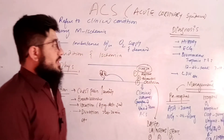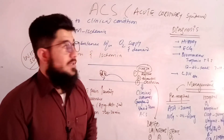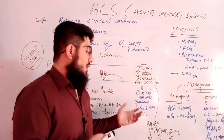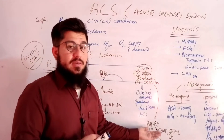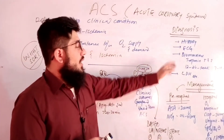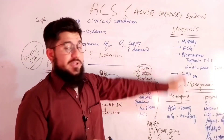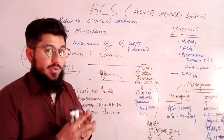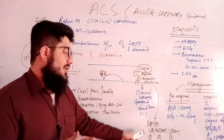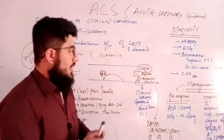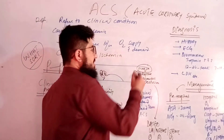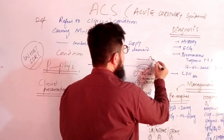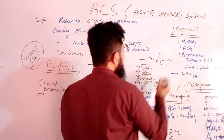Coming towards diagnosis, first we take history, through which we can identify the ACS. Then we go for the ECG — the next step that helps us understand the patient's ACS. On the ECG, we have the P-wave, then the QRS complex, then the T-wave.